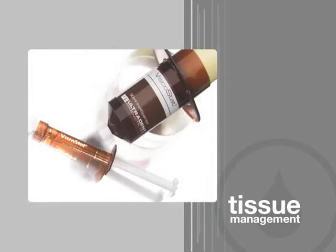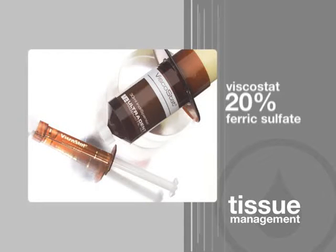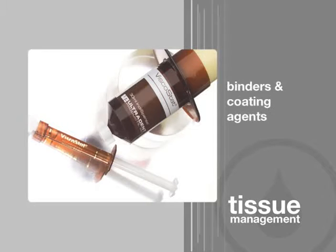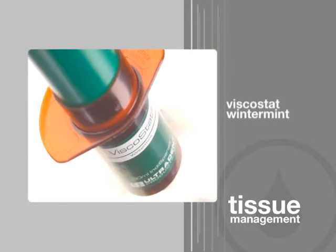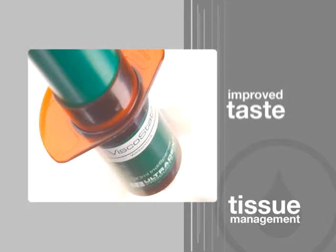Astringident is a 15.5% ferric sulfate solution and was Ultradent's first hemostatic agent. Viscostat is a new and improved version of Astringident. It's a 20% ferric sulfate coagulative hemostatic gel with binders and coating agents to make it kinder to tissues. Viscostat is also more viscous, which makes it easier to control. Ultradent also offers Viscostat Wintermint, a mint-flavored version of the original Viscostat formula that offers an improved taste for the patient.